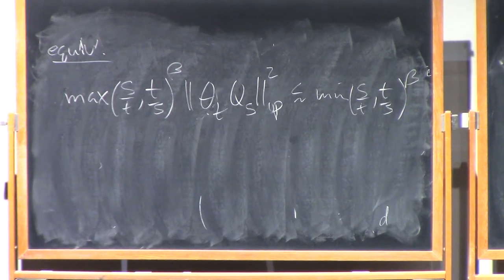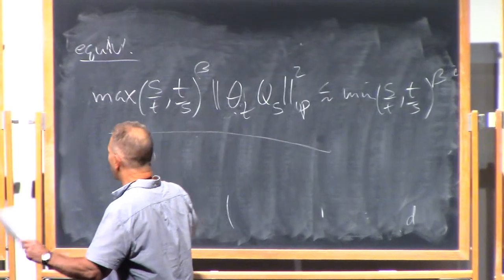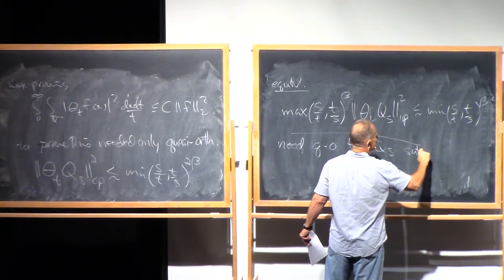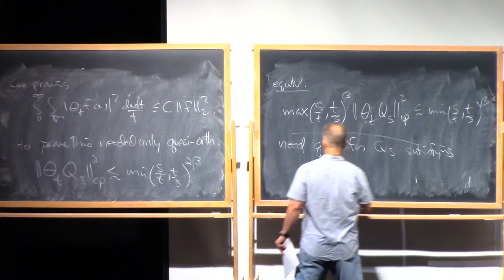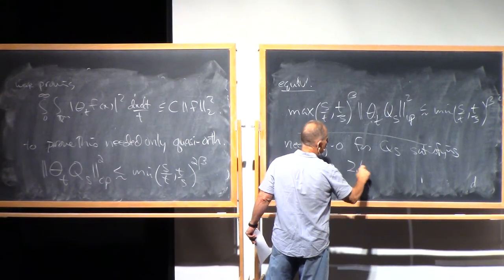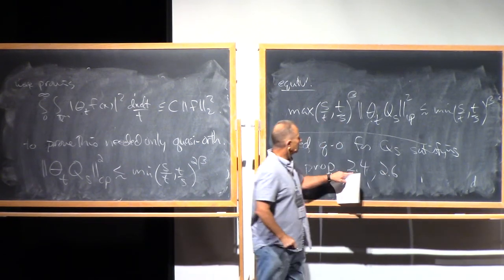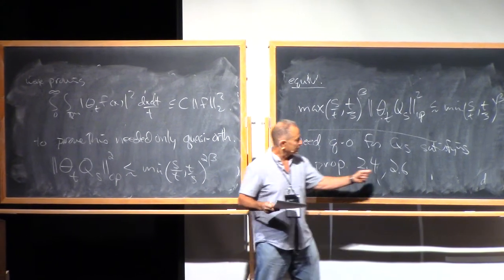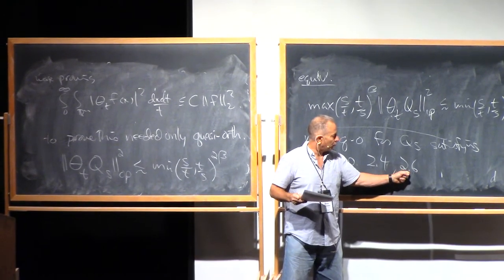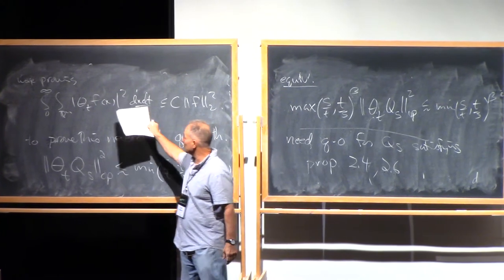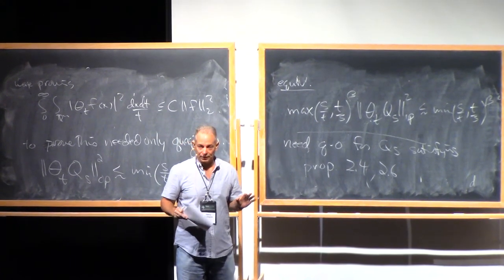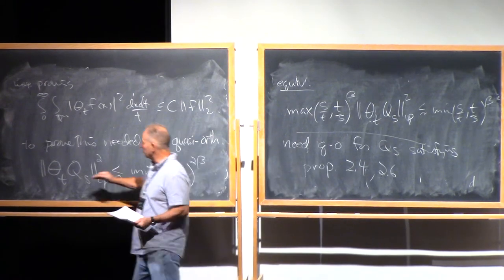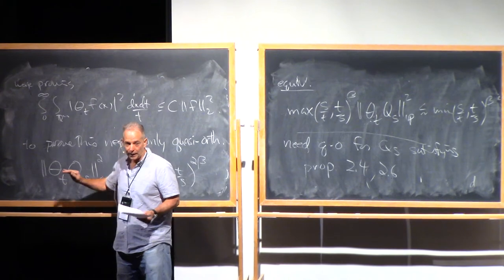Okay, I glossed over one thing here. You need this for, we need the quasi-orthogonality for a family Q_s that satisfies the propositions 2.4 and 2.6, which were the Calderon reproducing formula, which let us resolve the identity in terms of an integral of the Q_s's, and 2.6, which was the fact that the Q_s's themselves give rise to a square function bound analogous to that. And those were the only ingredients needed.